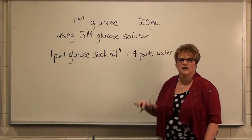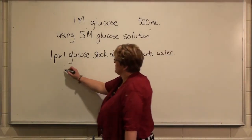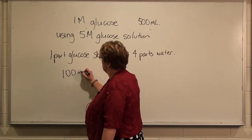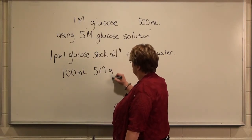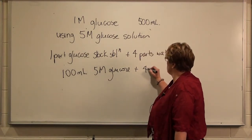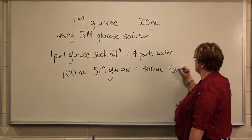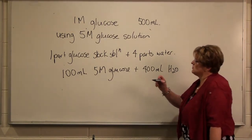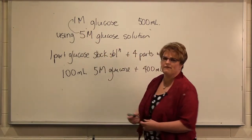So in our example here, to make our 5 molar glucose solution, we would take 100 mils of the 5 molar glucose and add 400 mils of water. And immediately what we have done then is to reduce the concentration of glucose five-fold.